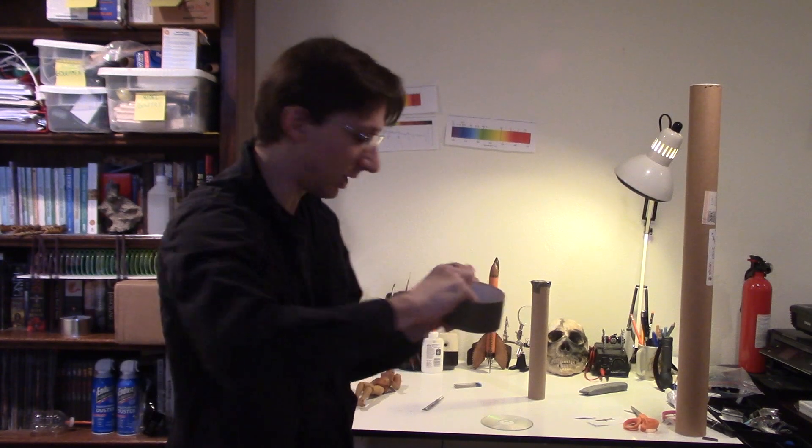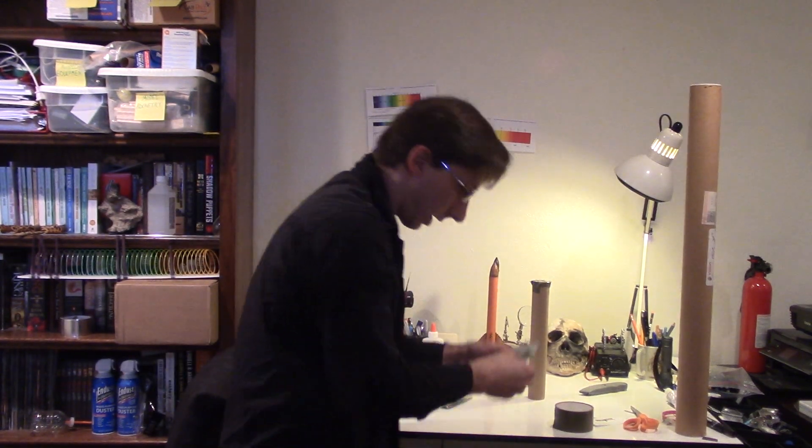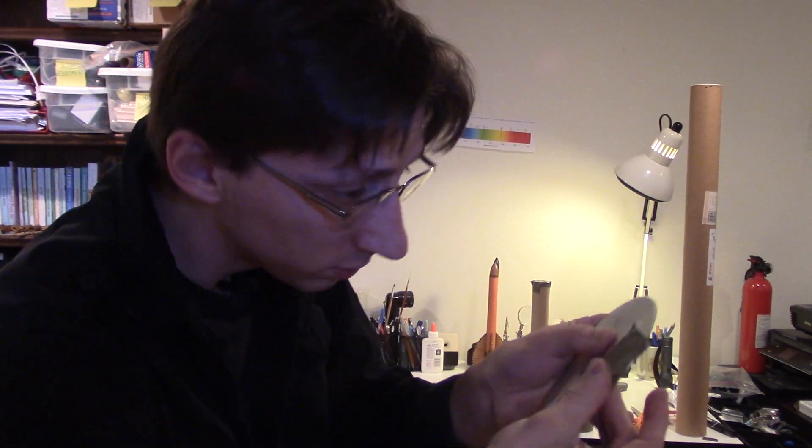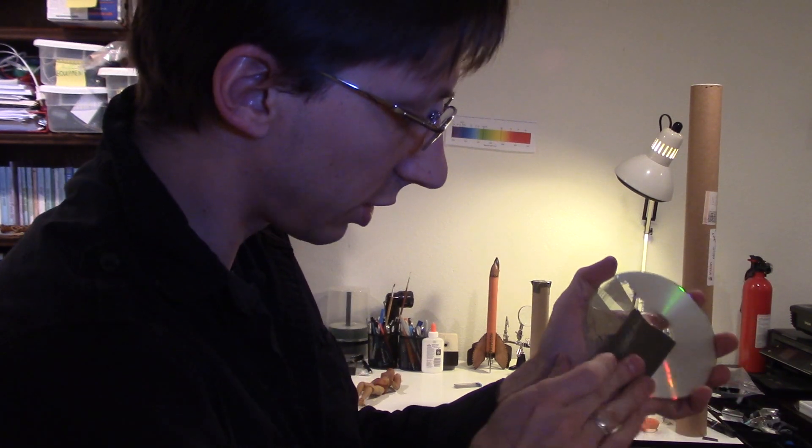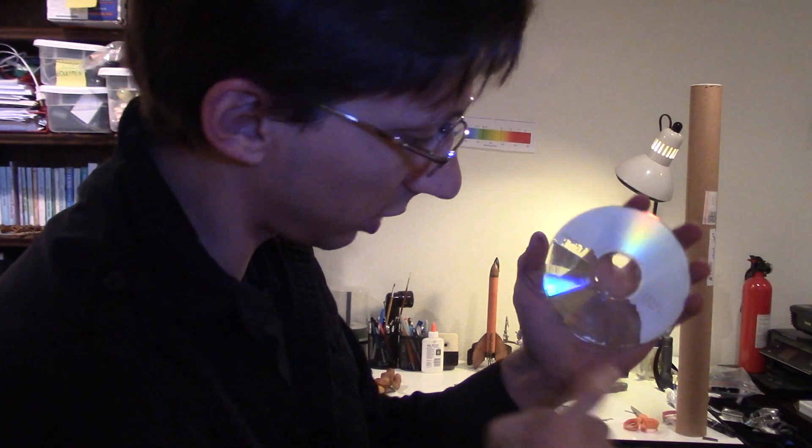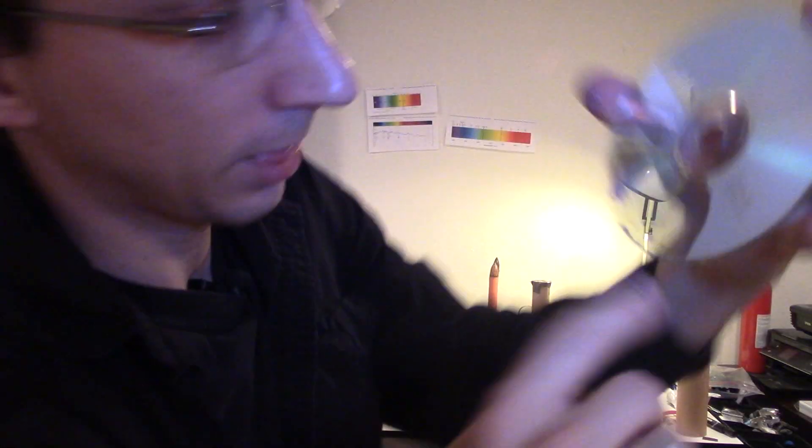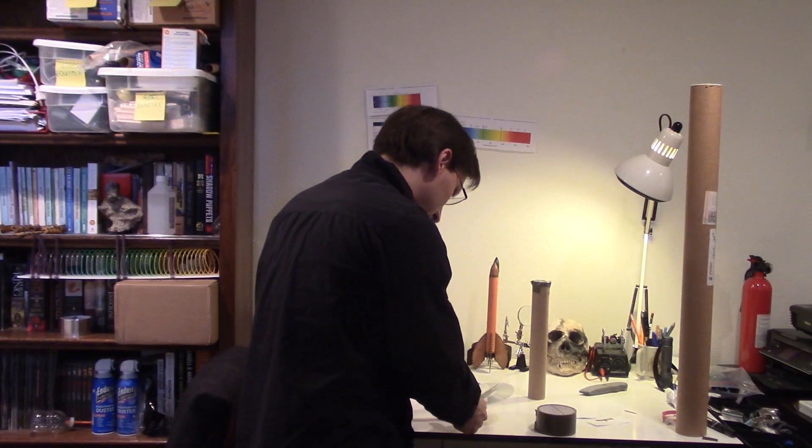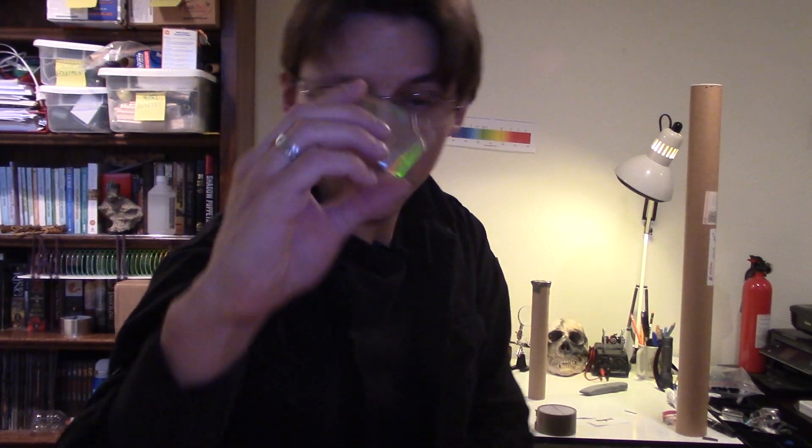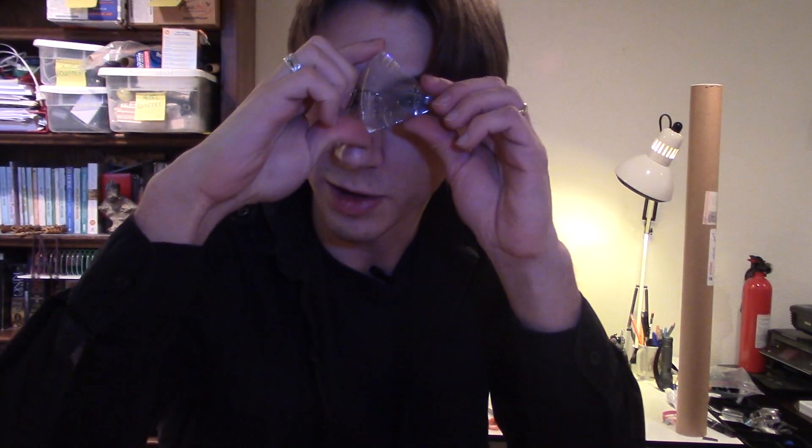You should be able to peel off most of that backing. Keep doing this until you have a reasonably large section where there's no silvering on it anymore. Then you're going to want to take this section and cut it out. And this will be what we look through. I can see the spectra from my light.